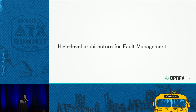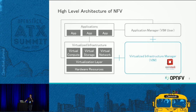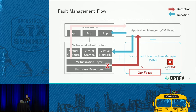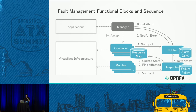This is a high-level architecture for fault management in NFV. On the left side you can see the application and virtualized infrastructure, and on the right side the manager of each. We're going to use OpenStack as the virtualized infrastructure manager, which will detect failures in the virtualized infrastructure and then notify the application manager. During that process, the information will be masked or transformed to hide the low-level physical resources and present the failure as a virtualized resource failure.